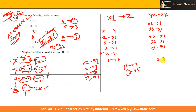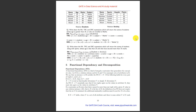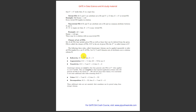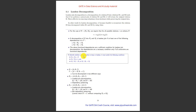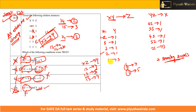Functional dependency also involves Armstrong axioms. These are provided in the course notes and include rules such as reflexivity, augmentation, transitivity, union, and decomposition, along with concepts of trivial and non-trivial FDs and how to find the closure of functional dependencies. In the next lecture we will discuss lossless decomposition and normalization.